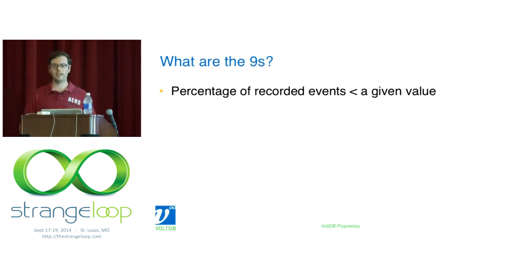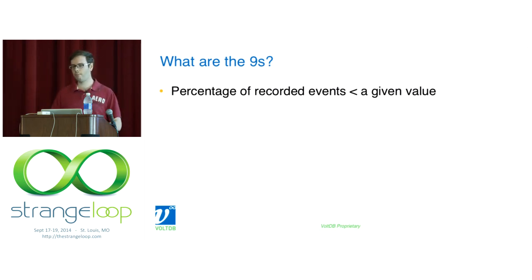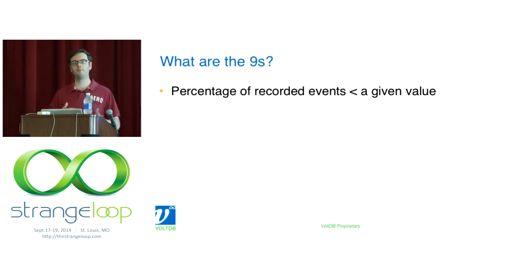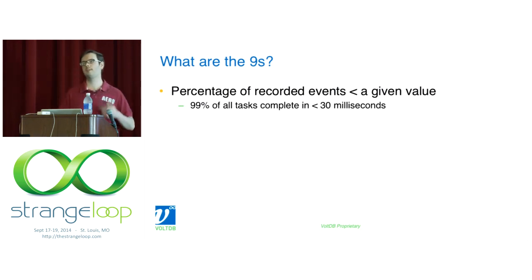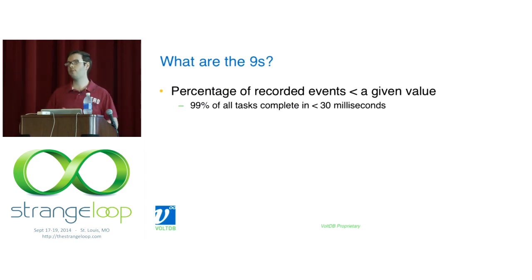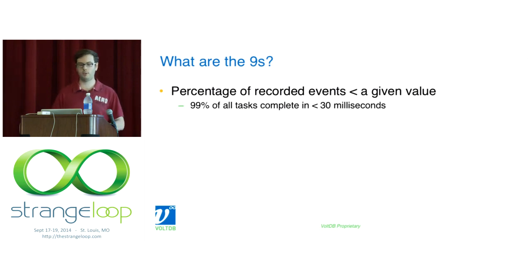You have a collection of events you've recorded — let's say, the latency of various database transactions. What percentage of the recorded events are less than a given value? If you have 100 samples sorted by latency and the 99th sample is 30 milliseconds, then the 99th percentile is 30 milliseconds. 99% of your transactions completed in less than 30 milliseconds. That 100th sample could be five days, an hour, or 31 milliseconds.